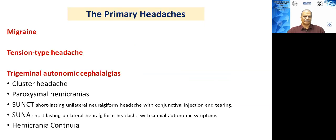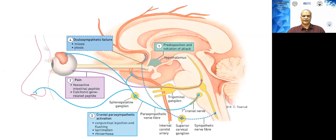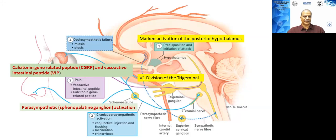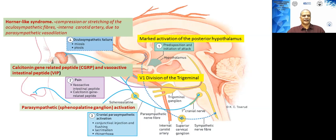The last group of primary headaches is the trigeminal autonomic cephalalgias, also called TAC headaches. Here the pathophysiology is slightly different — the main trigger is the posterior hypothalamus, which sends impulses via the V1 division of the trigeminal nerve, which in turn activates the parasympathetic ganglia. This produces the classical features of TAC headaches: conjunctival congestion, lacrimation, and rhinorrhoea. There is also release of CGRP and vasoactive intestinal peptides, causing severe pain. Some patients can develop a Horner-like syndrome due to compression or stretching of the carotid artery, which carries sympathetic fibers.